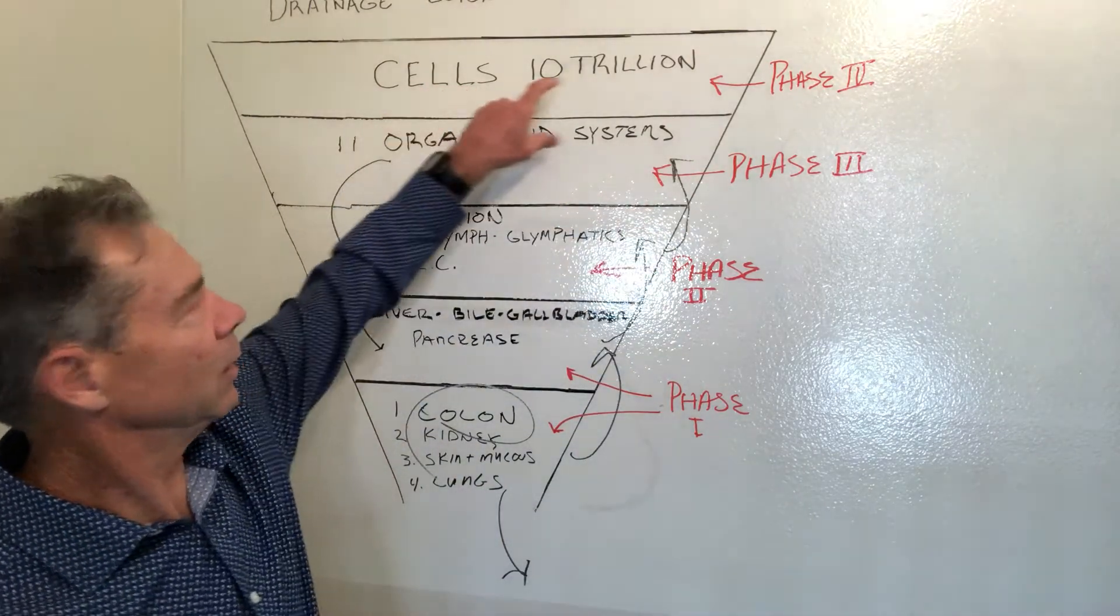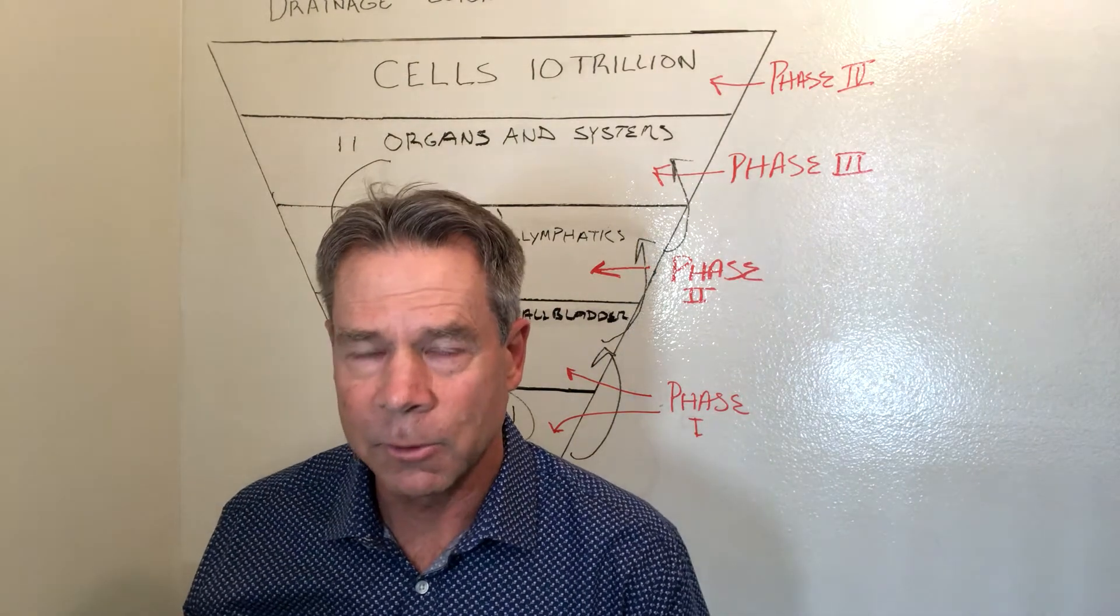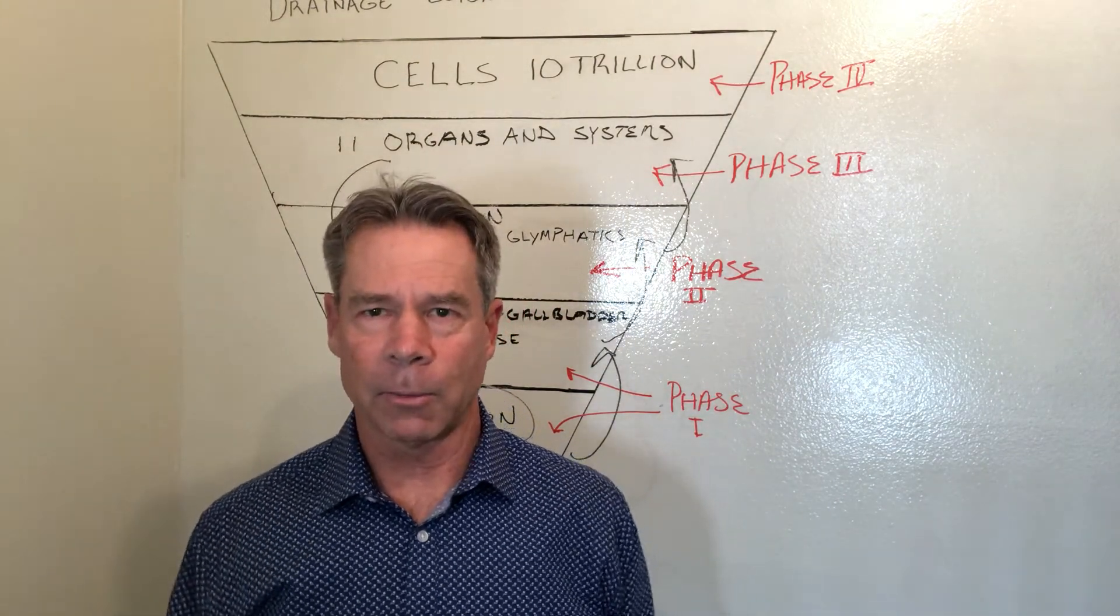Otherwise, these toxins and those 10 trillion cells within these organ systems are just going to recirculate back into the body and find their way somewhere else.